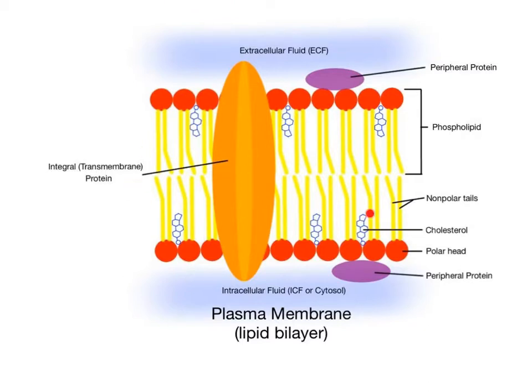In the middle of the bilayer, there's a concentration of nonpolar fatty acid tails that are not attracted to any charged substances. The tails are hydrophobic molecules that are repelled away from water and other polar charged substances.